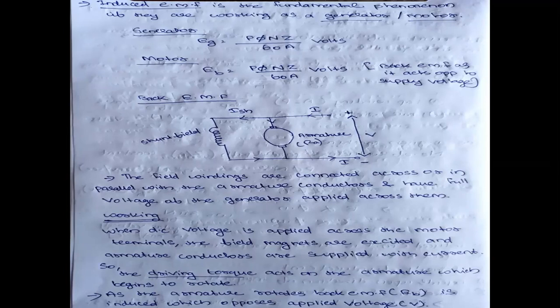It is called back EMF because it always opposes the supply voltage. This shows a DC motor connected in shunt — shunt connection means the armature and the field are connected in parallel. This is the case of a shunt-connected DC motor. The armature resistance is RA and the current passing through the shunt (parallel) path is Ish.